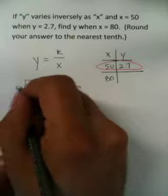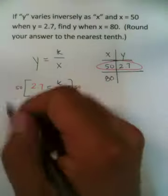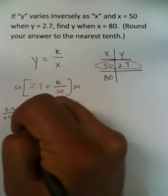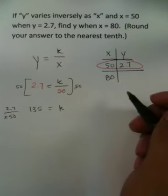You'll get k equals 50 times 2.7. You can do that with 2.7 times 50. You can do all sorts of things. I'm going to tell you right now, it's 135, so you go and practice that on your own.